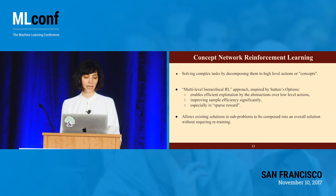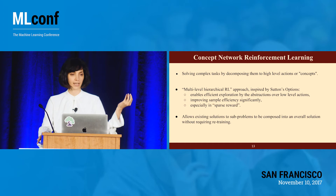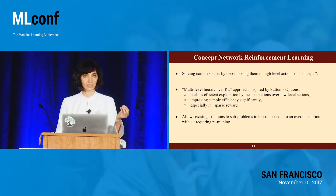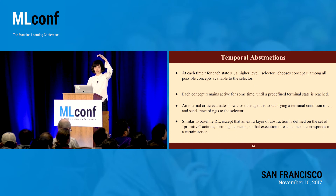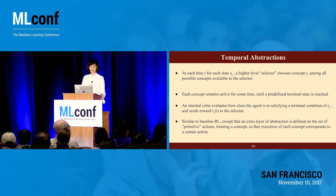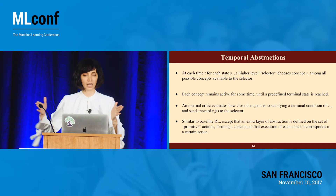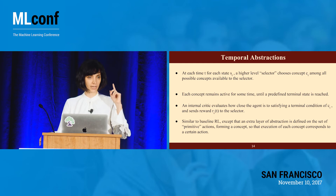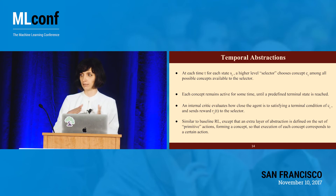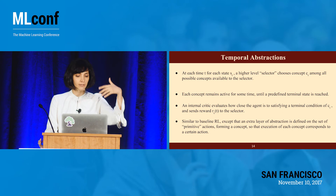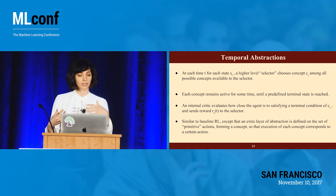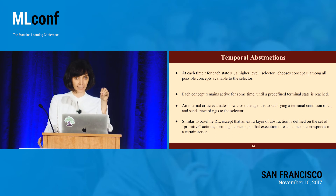That helps us decompose the problem, especially in sparse reward regimes. Another nice property is transfer — a concept trained to reach a point X and Y can be reused in other tasks, like transfer learning, without retraining. There is a top-level selector or controller which chooses among all of these higher-level concepts. Those concepts remain active for a period of time — that's the options thing — until some sort of termination condition is reached. The critic gives reward based on how close we are to the goal of that concept.